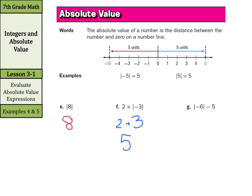So in our last one here, g, we have the absolute value of negative 6 minus 5. Well, do the absolute value of negative 6 first. That is 6 minus 5, and 6 minus 5 is 1. Be sure to show your steps when you're solving these questions.